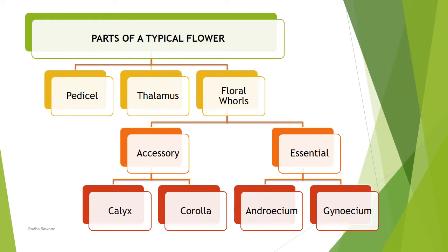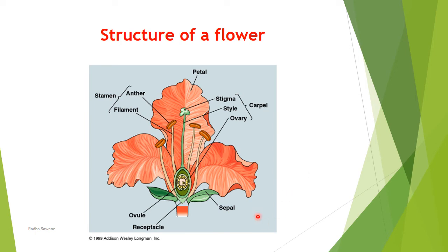We study the structure of a flower using its vertical section, because that exposes all parts of the flower very clearly. The stalk of the flower is called the pedicel. When pedicel is present, the flower is called pedicellate; if there is no pedicel, the flower is called sessile. The swollen tip of the pedicel is called the receptacle, thalamus, or torus. This thalamus holds all four floral whorls.